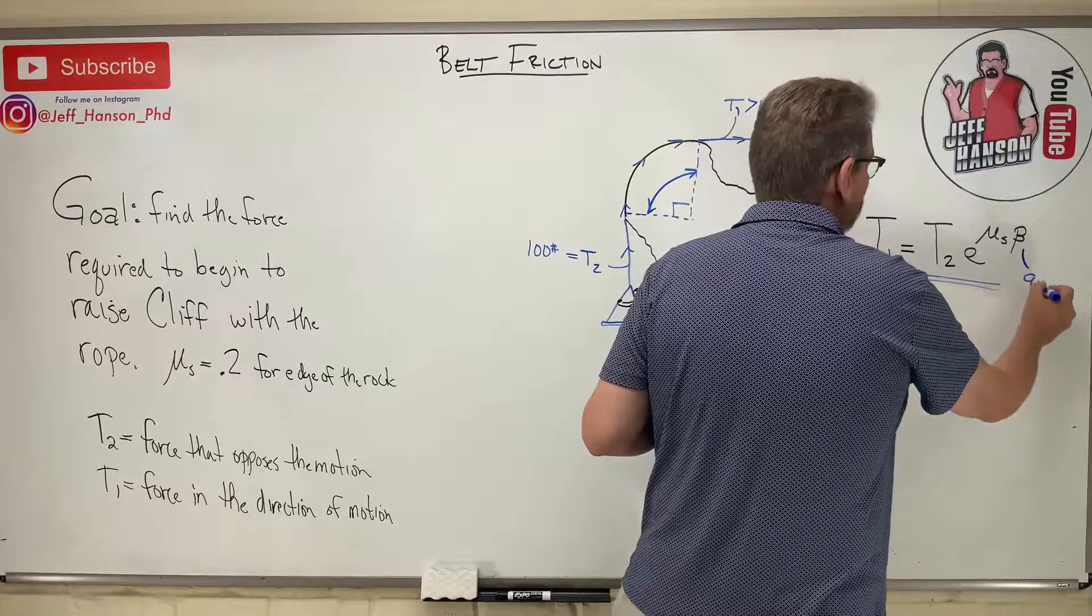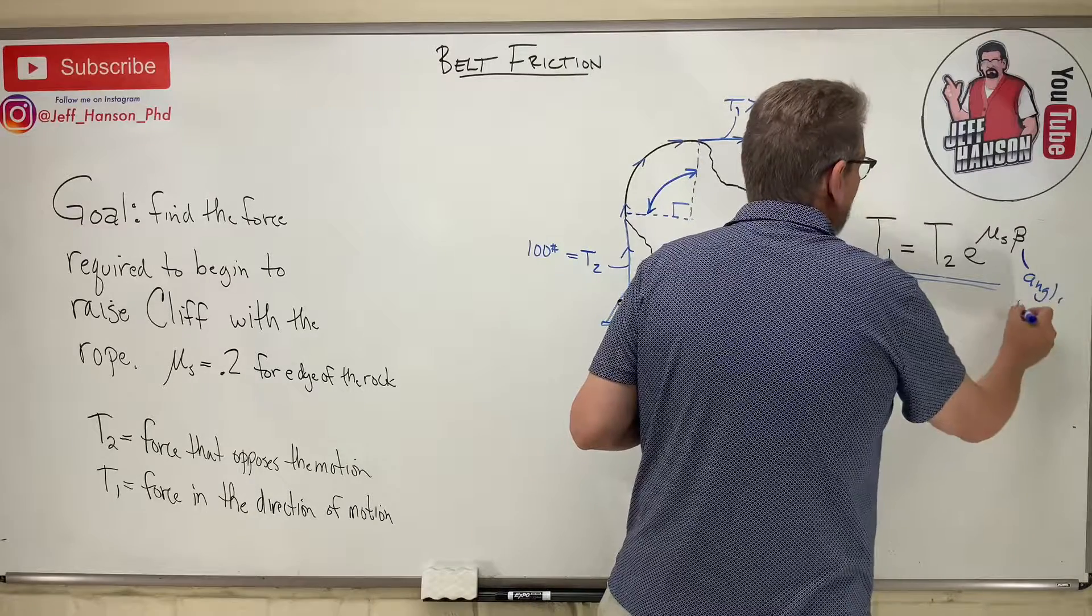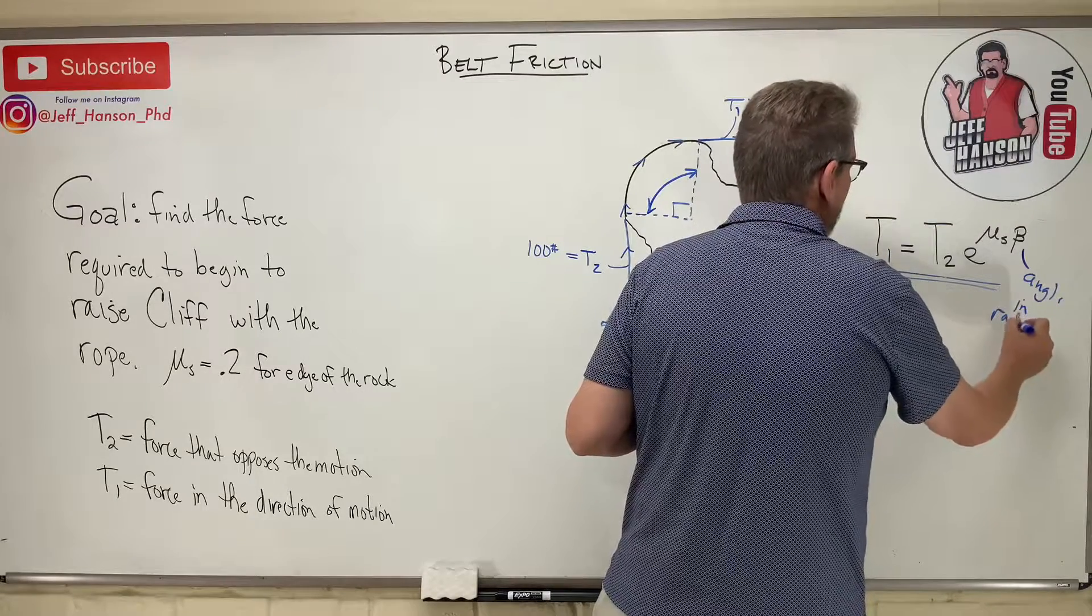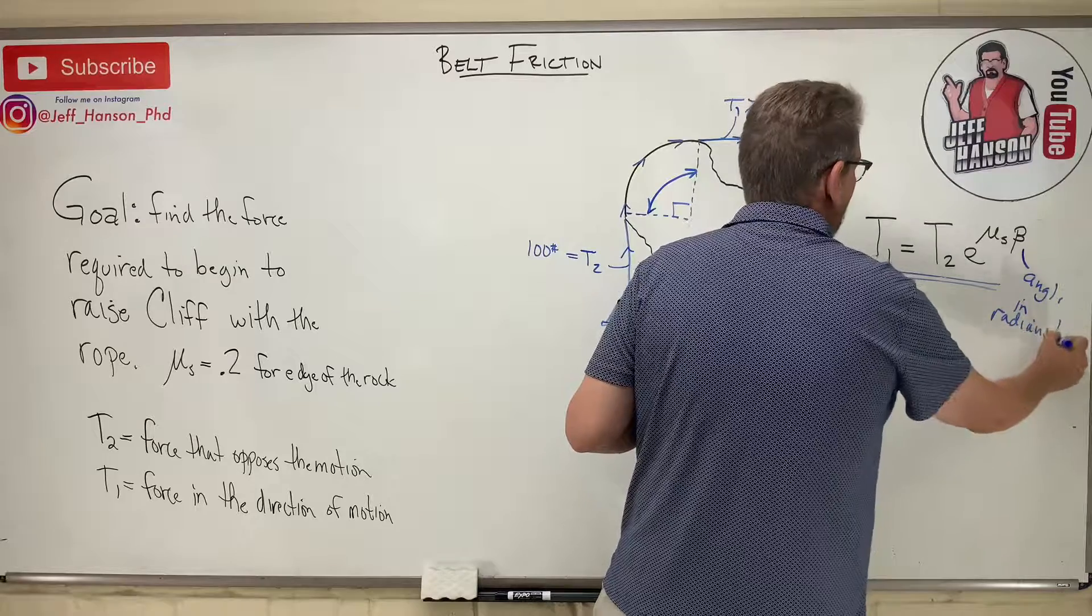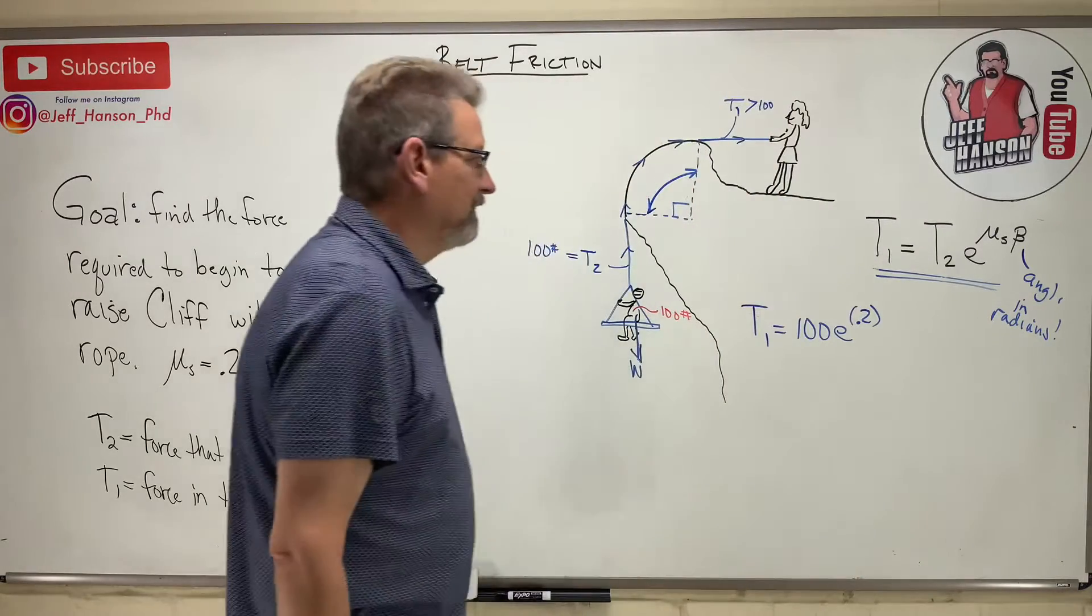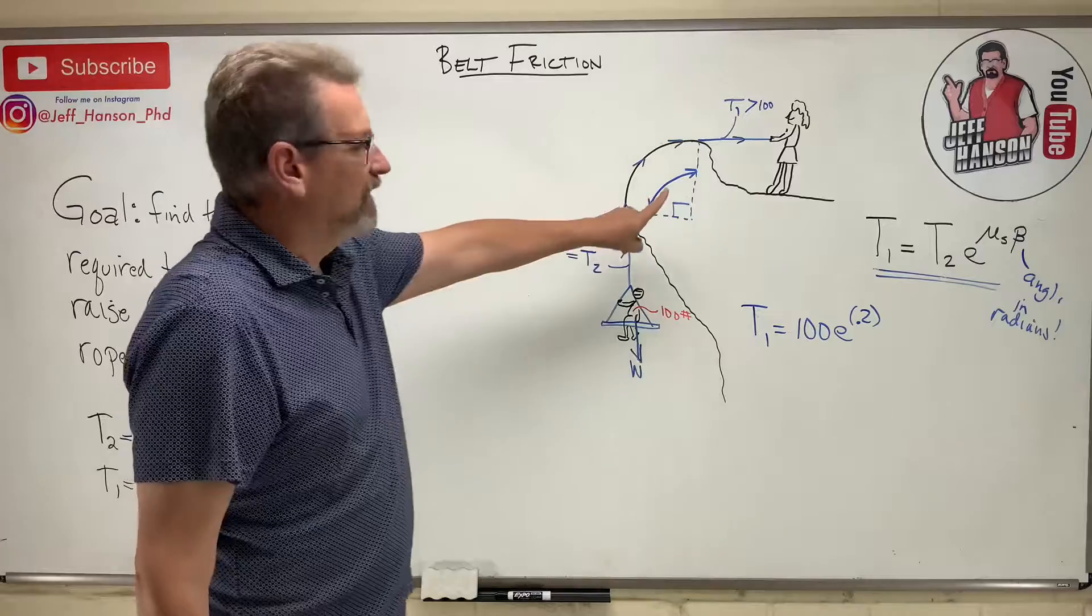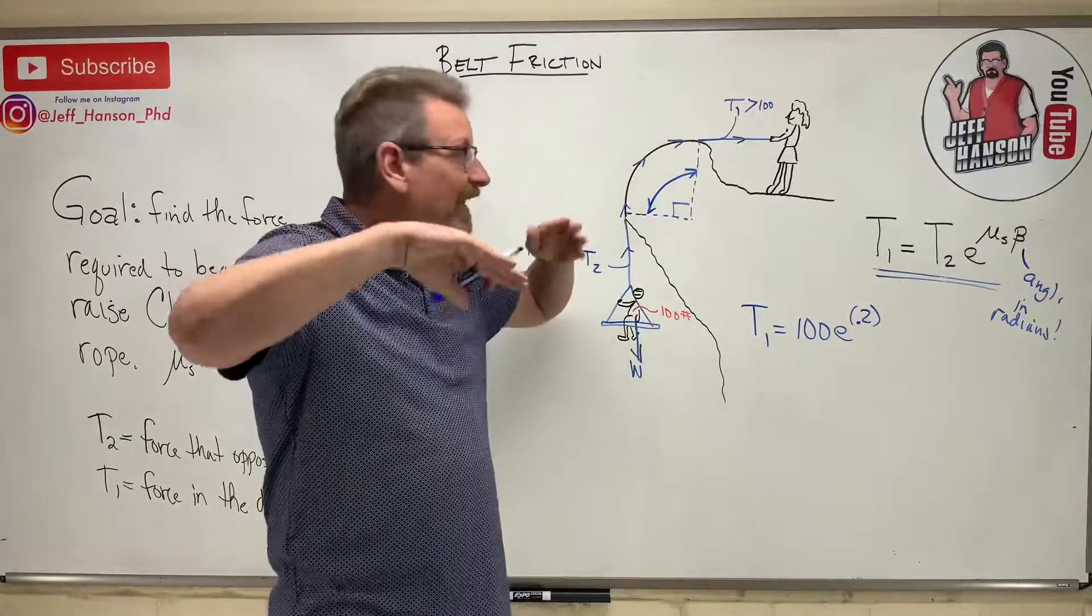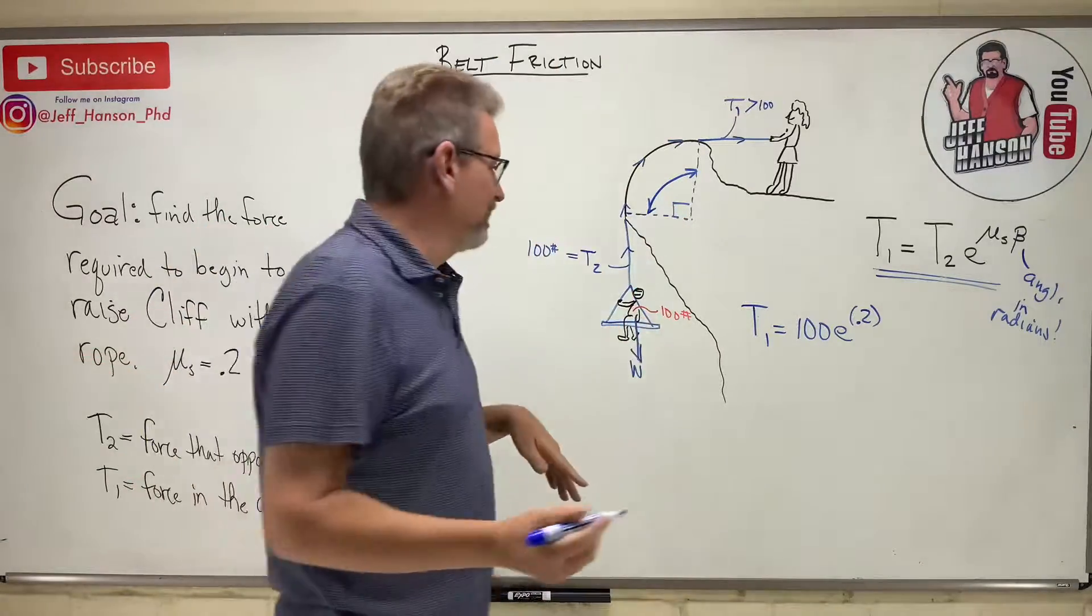You got to remember that now beta needs to be in radians. This is the angle in radians. Got to be. So what do we have here? 90 degrees. Let's see, 180 degrees is pi, so 90 degrees is pi over 2.